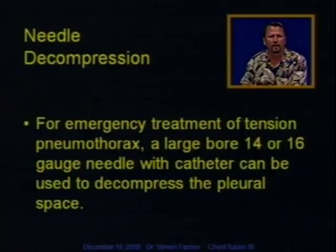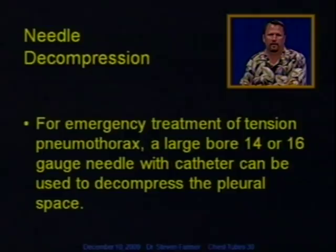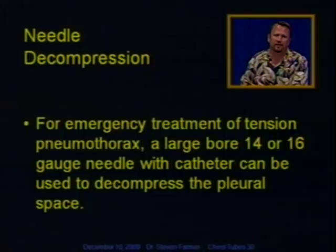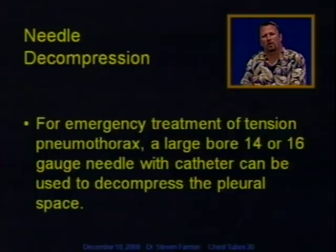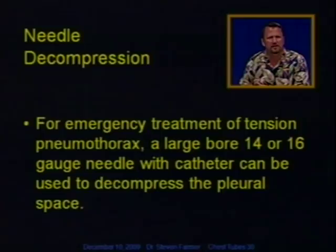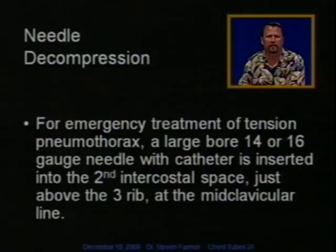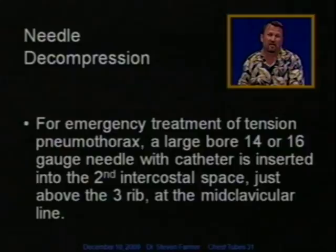The simplest form of a chest tube decompression is a needle with an angiocath on it — the trauma resource recommends one that's four inches long. Needle decompression is the emergency treatment for a tension pneumothorax. A large bore needle — 14 or 16 gauge — with a catheter can be used to decompress the pleural space. That will allow the air to be released, converting the tension pneumothorax to a simple pneumothorax and giving us time. The needle is inserted into the second intercostal space just above the third rib at the midclavicular line.